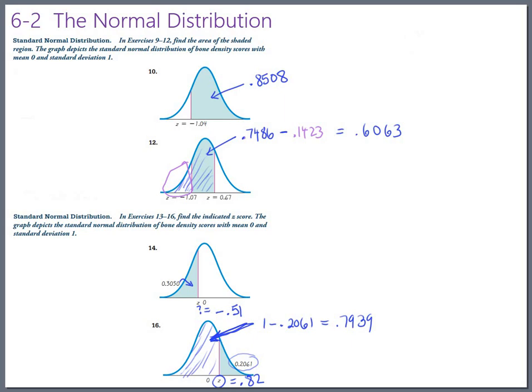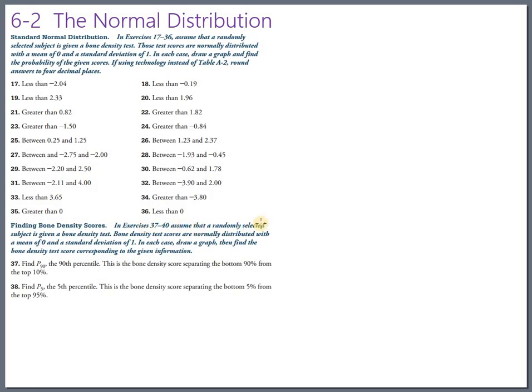Okay. Let's look at a couple more. So let's look at these, which are basically the rest of the homework. And I'll just pick a few of these out somewhat randomly. So let's look at something like number 20. So there are instructions up here say, this is normally distributed, mean of 0, standard deviation of 1. They say, draw a graph and then find a probability. And we are using technology. We're not using the table. So we'll round to four decimal places. Okay.